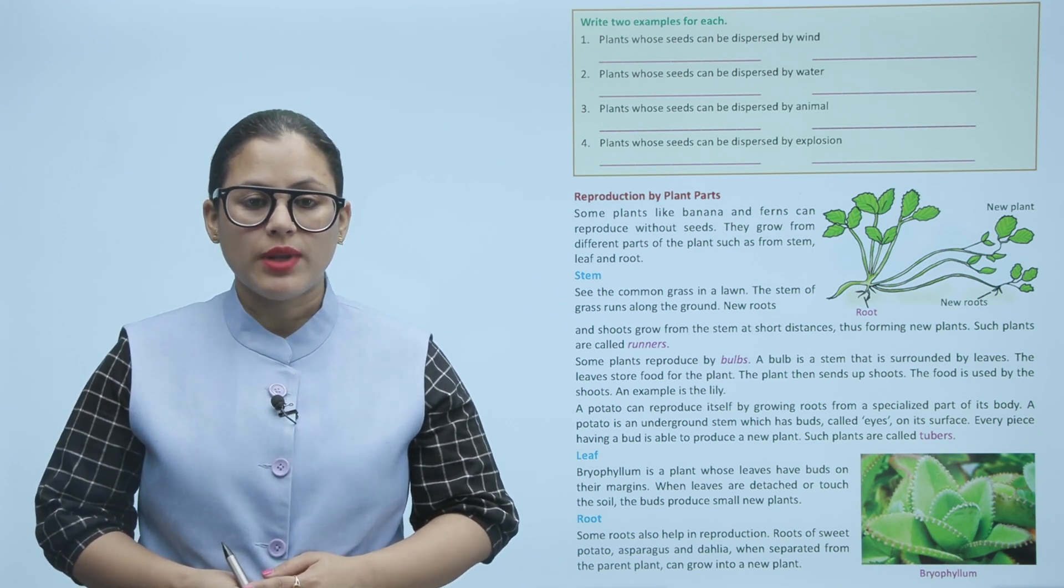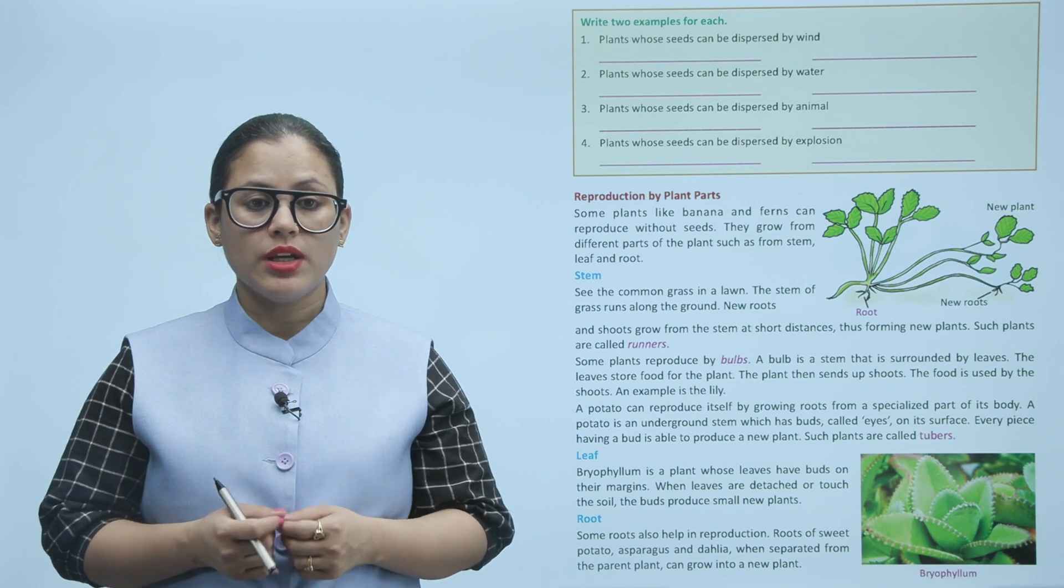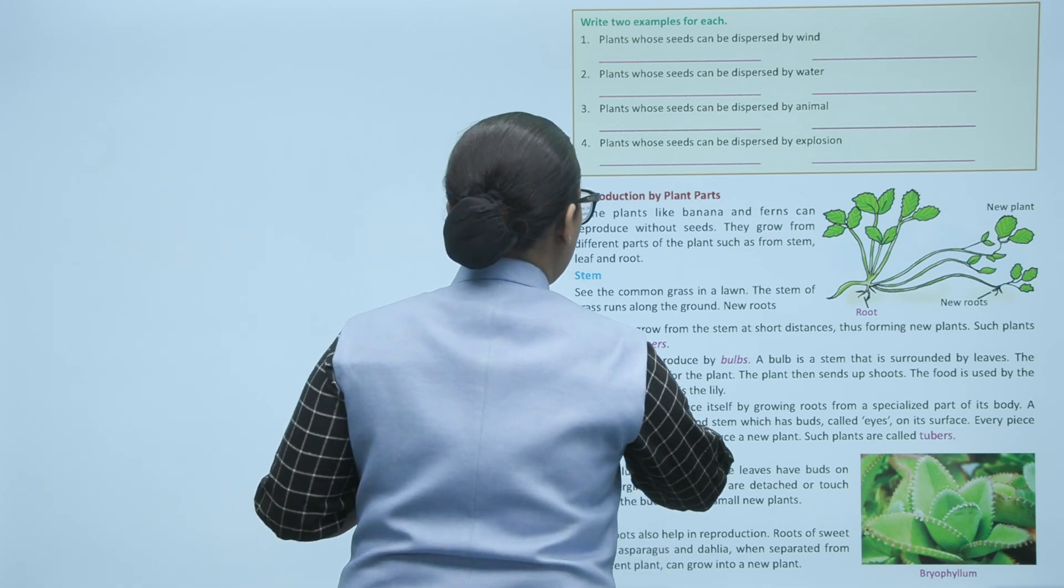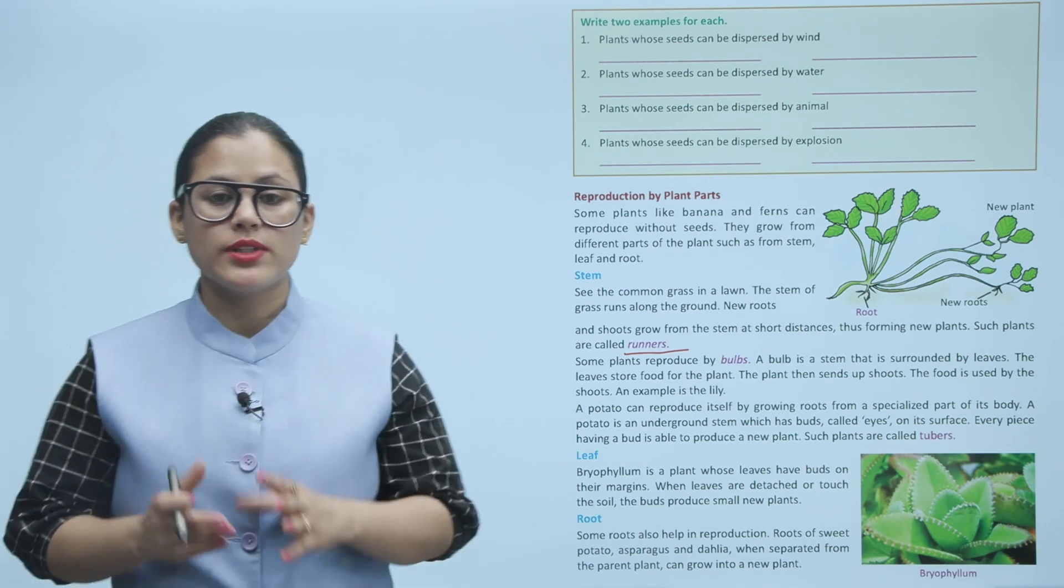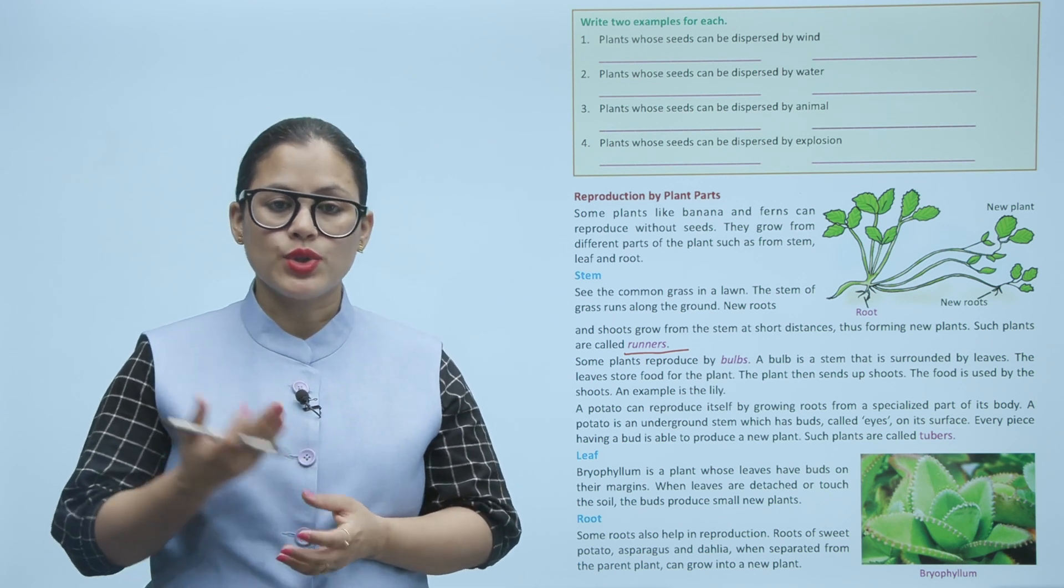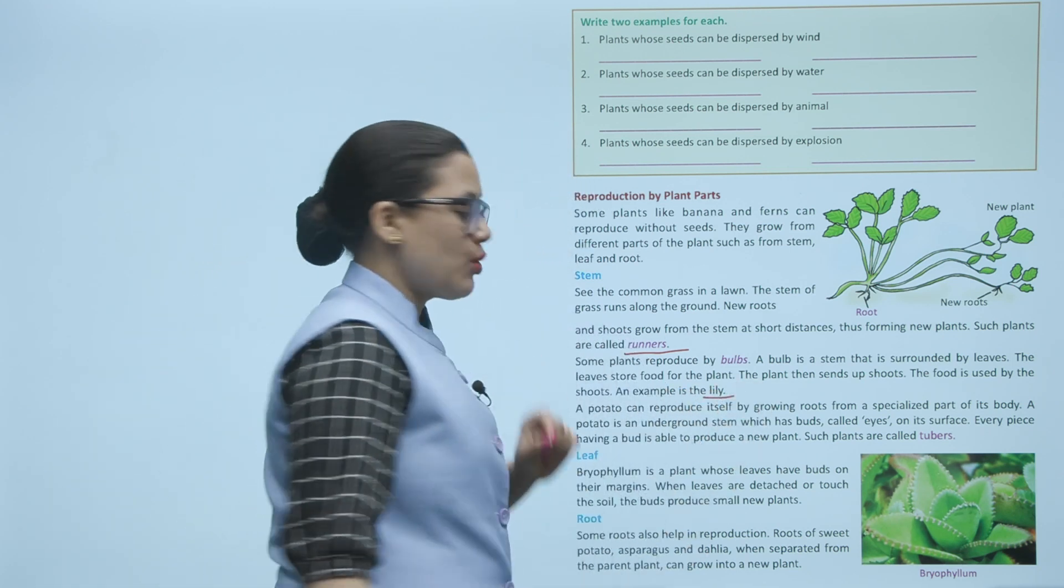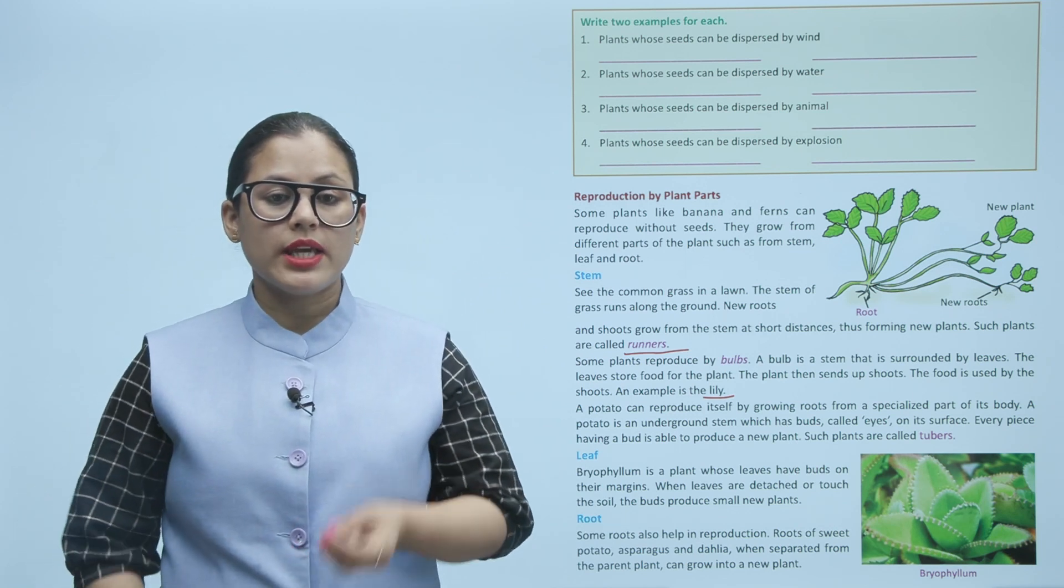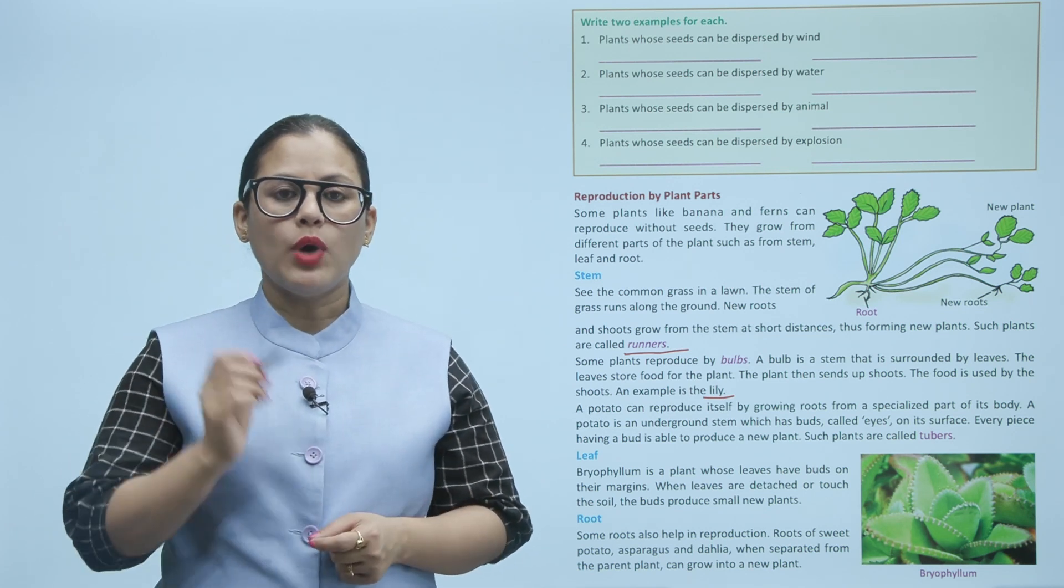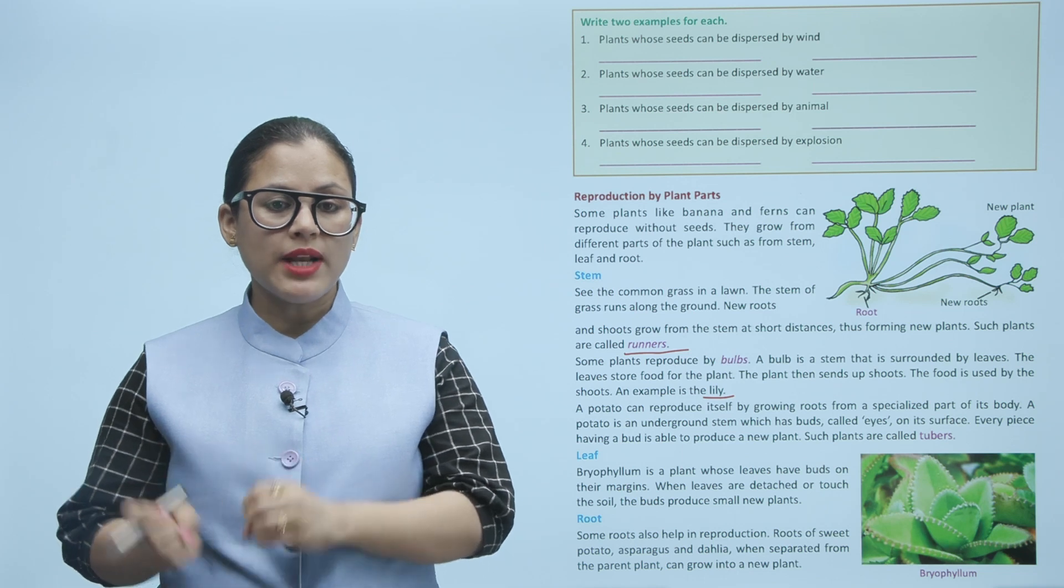A potato can reproduce itself by growing roots from a specialized part of its body. A potato is an underground stem which has buds called eyes on its surface. Every piece having a bud is able to produce a new plant. Such plants are called tubers.